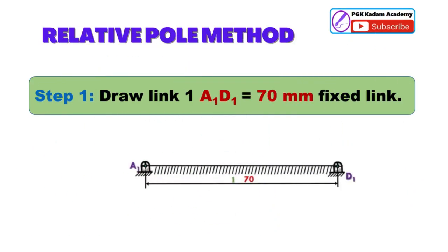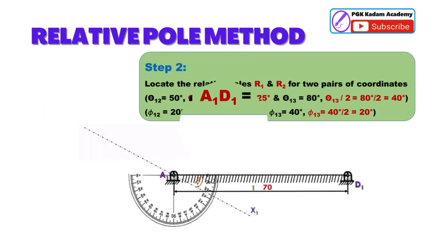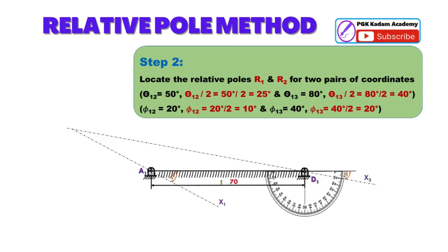Step 1: Draw link 1 A1D1 equal to 70 mm fixed link. Step 2: We have to locate the relative poles R1 and R2 for two pairs of coordinates. Draw line X1 passing through A1 with an angle theta 1-2 by 2 equal to 50 degrees by 2 equal to 25 degrees.